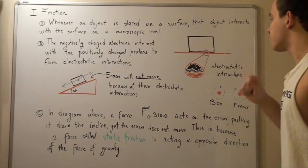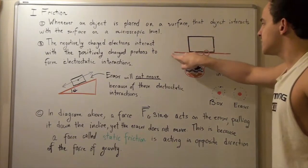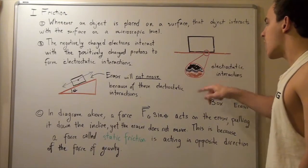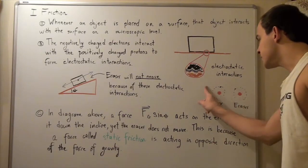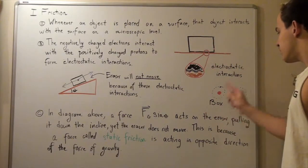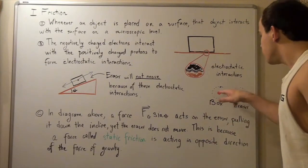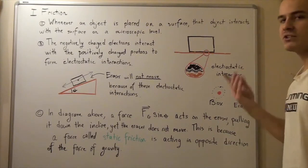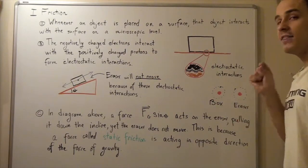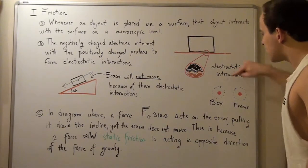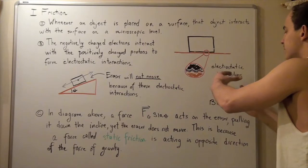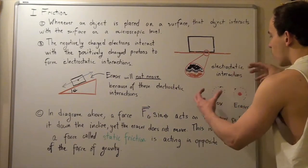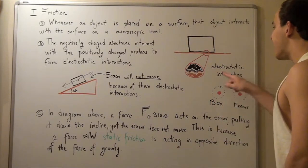Looking at the illustration, suppose this is our eraser and this is the surface of our box. Zooming in to the microscopic subatomic level, suppose this is an atom of the box and this is an atom of the eraser. Both nuclei are composed of protons and are positively charged. Both atoms also have electrons orbiting the nuclei. The positive nucleus of one atom interacts with the negative electrons of the other, forming electrostatic interactions.